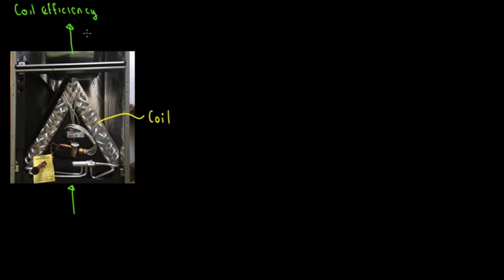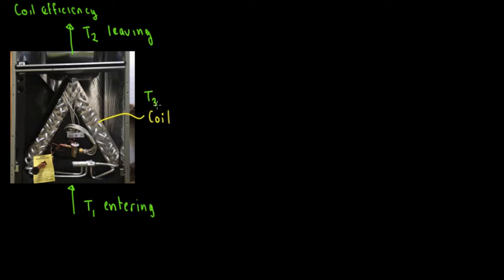So the coil efficiency is based on the temperatures. We're going to have the temperature that is leaving — temperature one, or outlet — and the temperature that is entering — temperature two, or inlet. The coil temperature will be T3, also called the ADP, which stands for apparatus dew point.